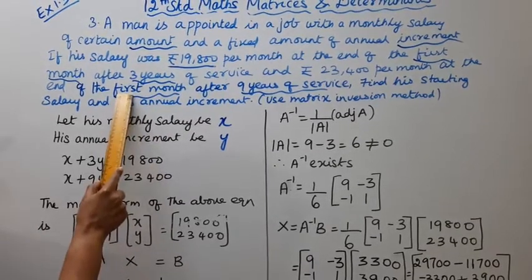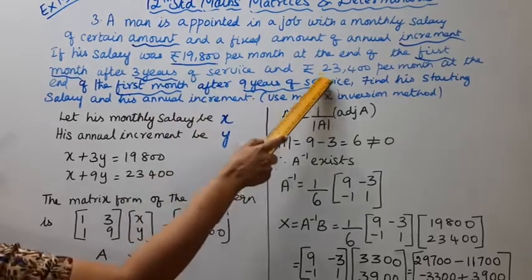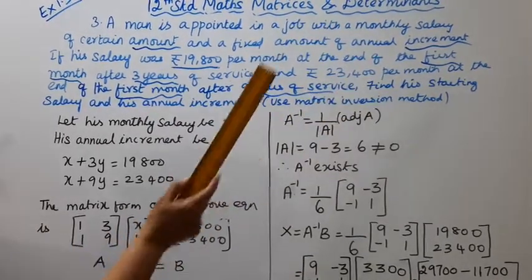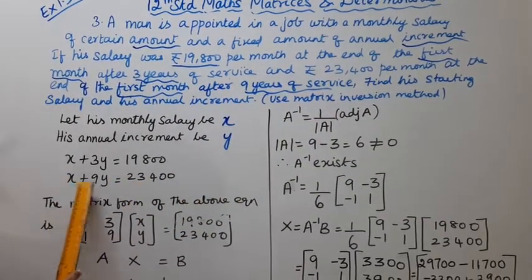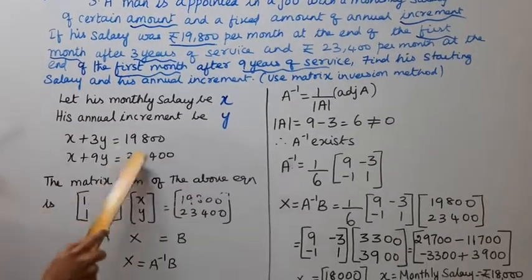At the end of the first month after 9 years of service, Rs. 23,400. So X plus 9Y equals 23,400. The matrix form of the above equation is: